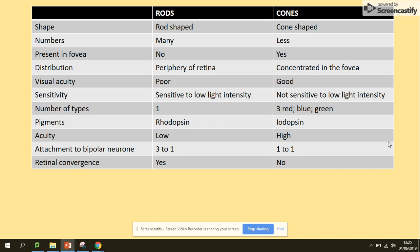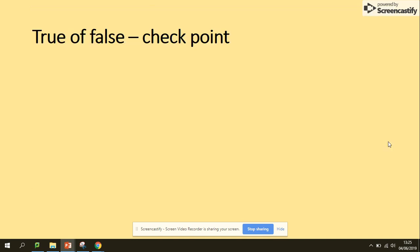Acuity: low for rods and high for cones. Attachment to the bipolar neuron cells: rods, three of them are attached to one bipolar neuron cell; cone, one to one. And retinal convergence: yes in the rod cells because of three being attached to one, and not in cone cells.